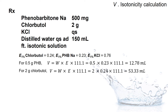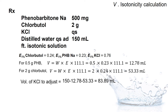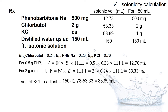For 2 grams of chlorobutanol, the volume needed is 53.33 mL. In this system we have a total of 150 mL, so the rest of the volume shall be adjusted by the potassium chloride, which accounts for 83.89 mL.